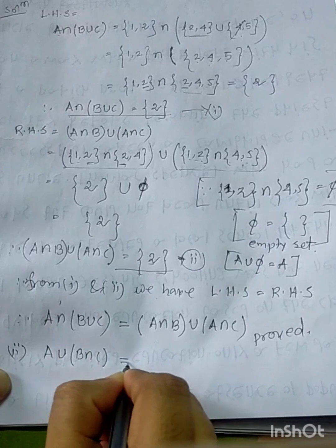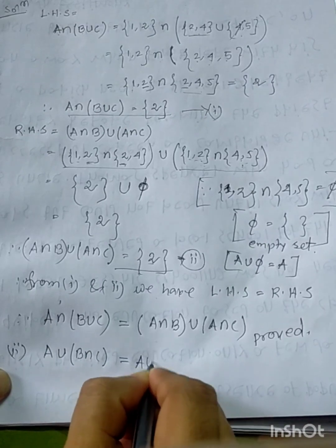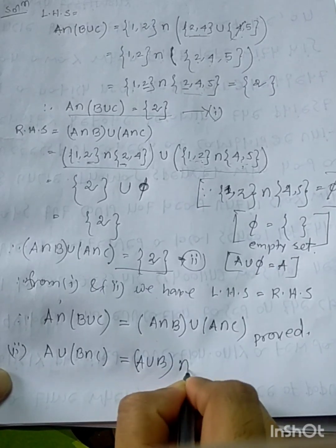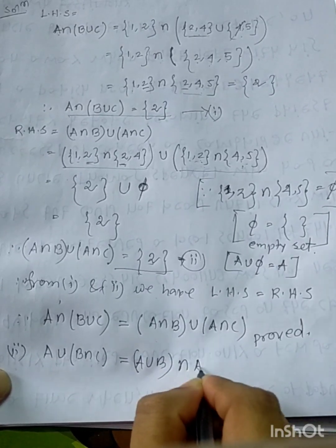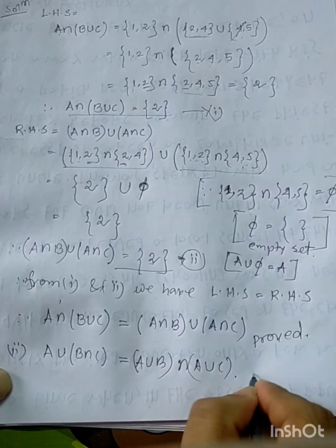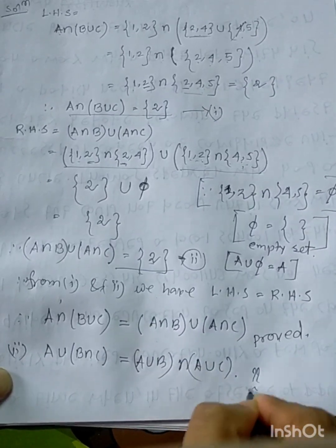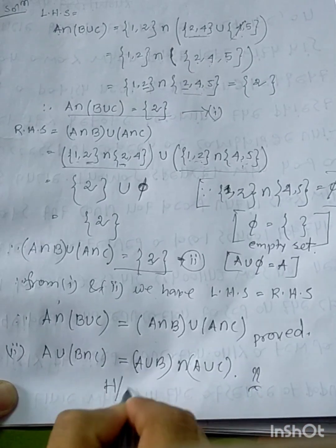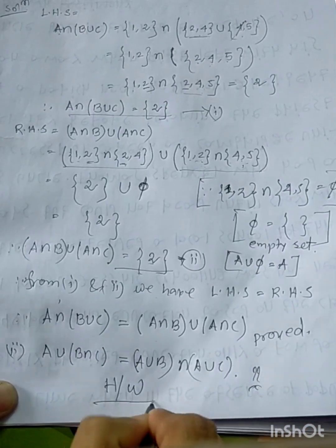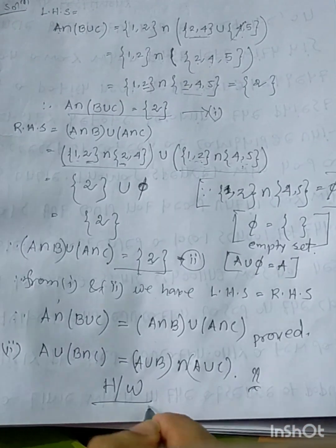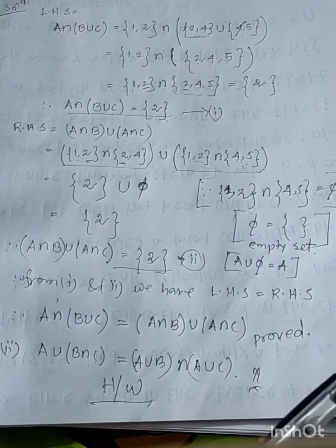Taking the union of these results, we get 2. Since LHS equals RHS equals 2, the distributive law A intersection B union C equals A intersection B union A intersection C is verified.